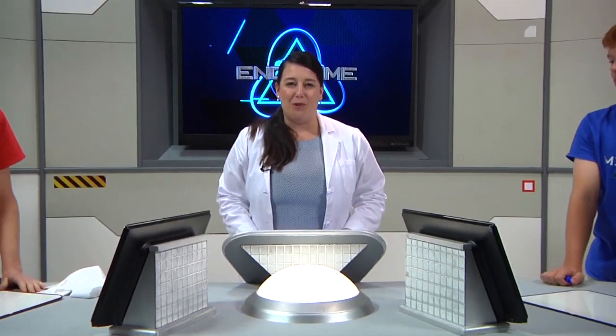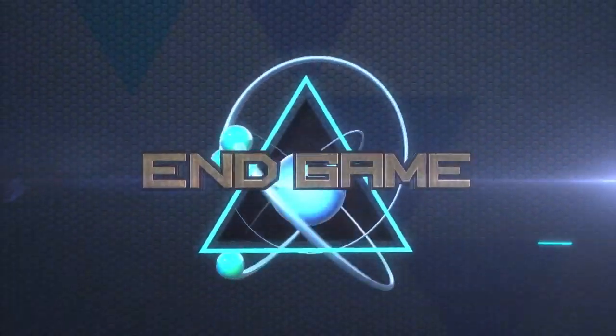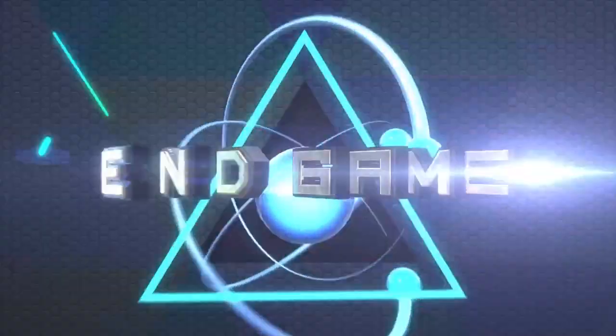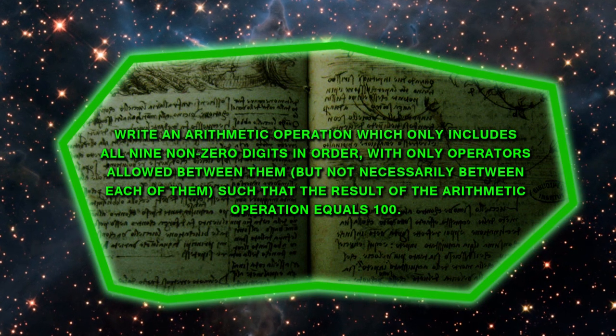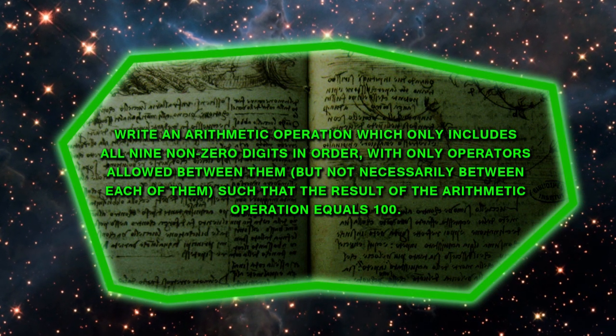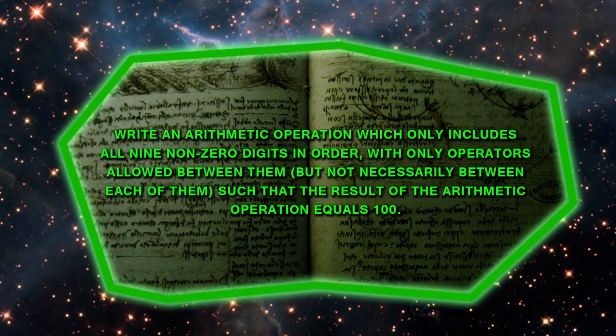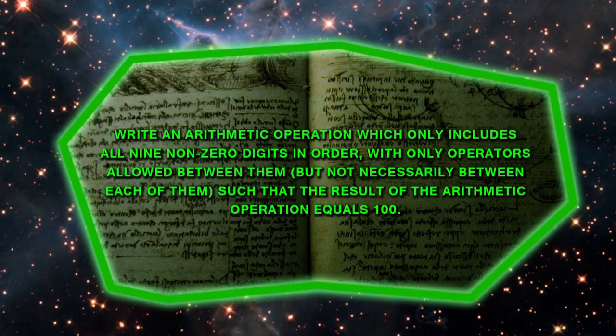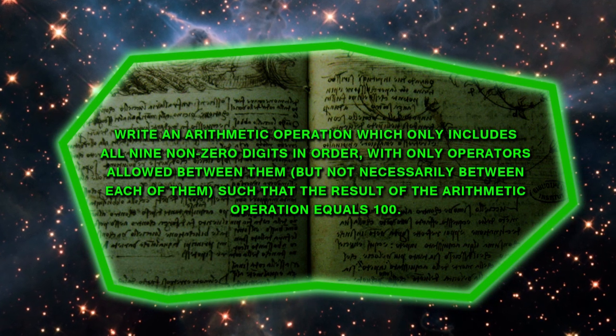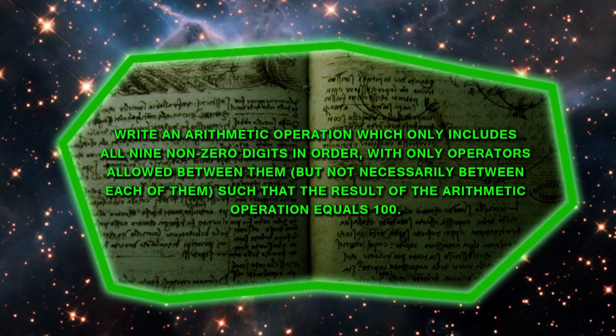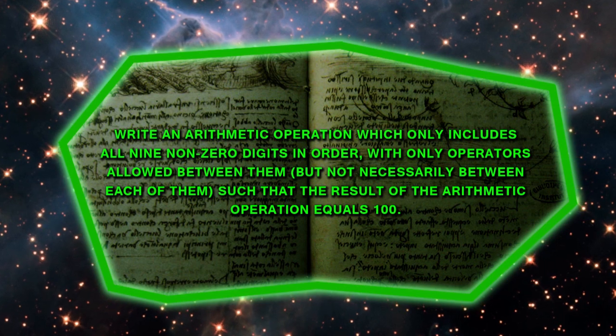Welcome back to Messed Up where our blue team is ahead at 166 points and red team not too far behind at 120 points. We have wagers from both teams and we are heading into our end game question. The subject is math. You guys will have three minutes to complete this: write an arithmetic operation which includes all nine non-zero digits in order, with only operators allowed between them, but not necessarily between each of them, such that the result equals 100.